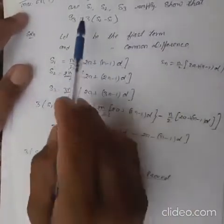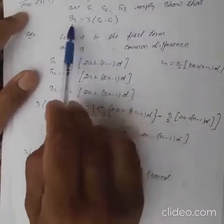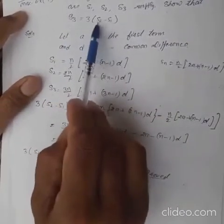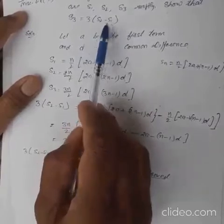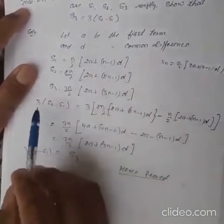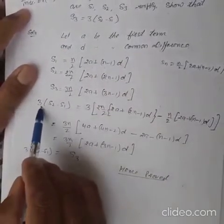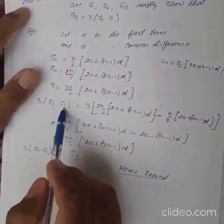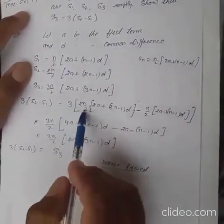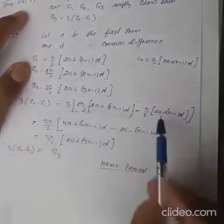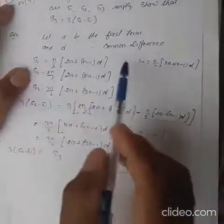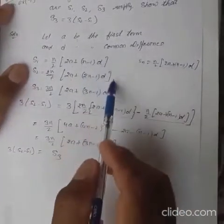Now we want to prove this statement, so we will simplify the right-hand side by putting the values of S2 and S1 and prove it equals S3. The right-hand side is 3 into S2 minus S1. We substitute the values from these two equations.